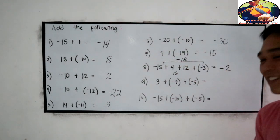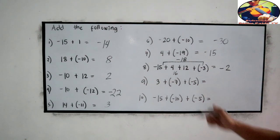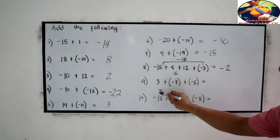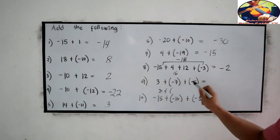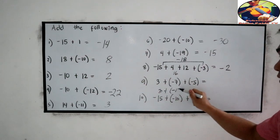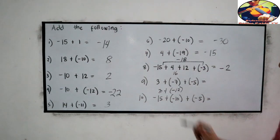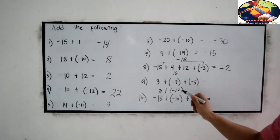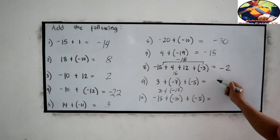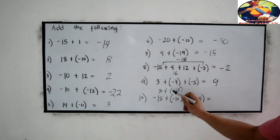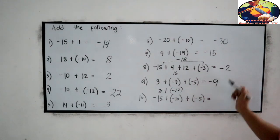Next, 3 plus negative 7 plus negative 5. Like terms: Negative 7 plus negative 5, negative 12. So unlike terms, subtract. That is 9. 12 is greater absolute value. So negative 9.